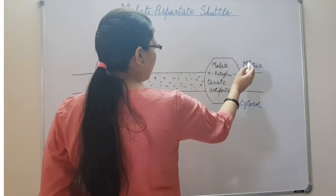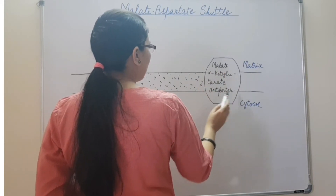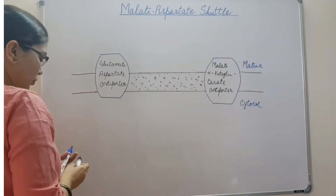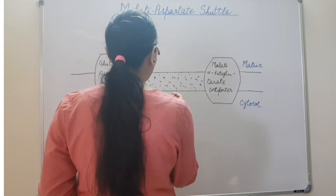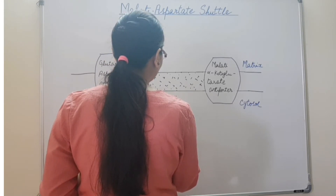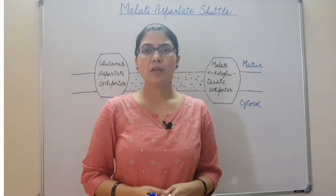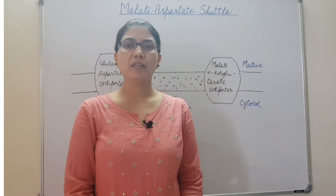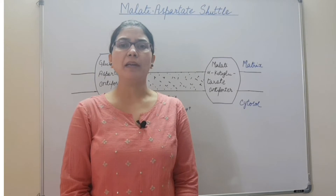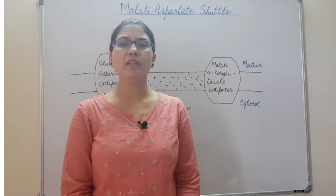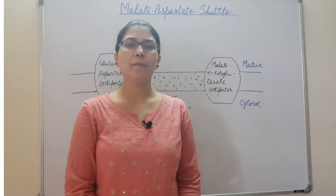This is the cytosol. This is the matrix, and the mitochondrial membrane uses two antiporters: the malate-alpha ketoglutarate antiporter and the glutamate-aspartate antiporter. In the cytosol, NADH is produced by glycolysis. We know that NADH transfers its electrons to the electron transport chain and ATP is produced. But the electron transport chain is present in the inner mitochondrial membrane, which is impermeable to NADH. So how do the electrons from NADH pass to the electron transport chain?